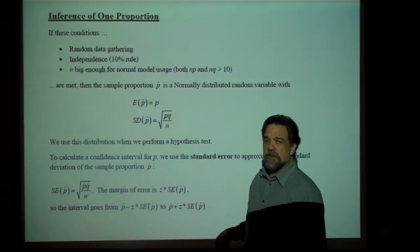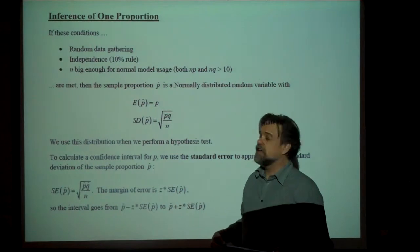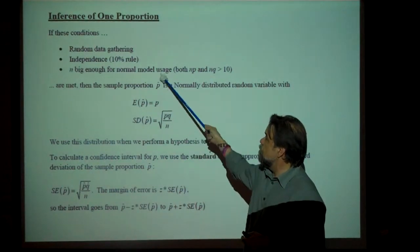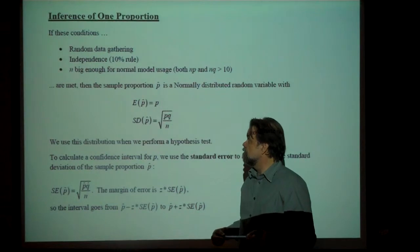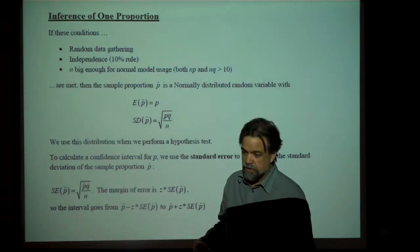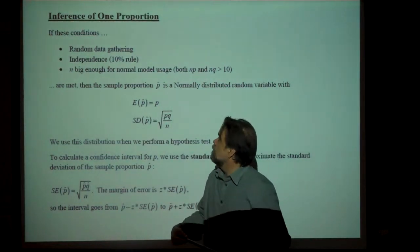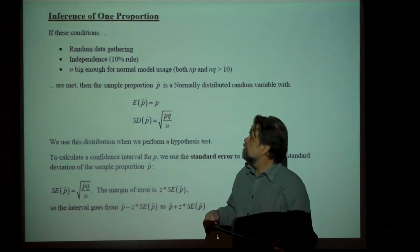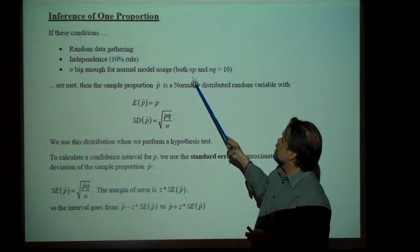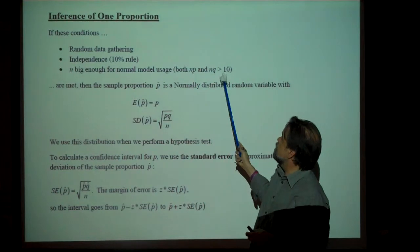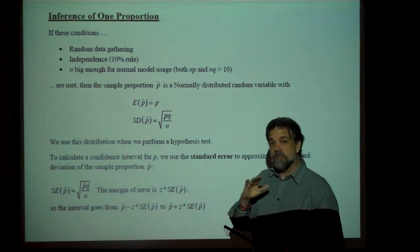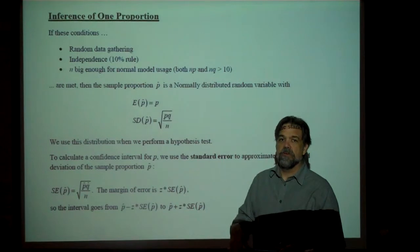Is n big enough? The whole purpose of that is to make sure that the normal model is appropriate. With single proportion inference, the way that we check to see if n is big enough is by seeing: is np bigger than 10, and is nq bigger than 10? If both of them are bigger than 10, we're good to go.